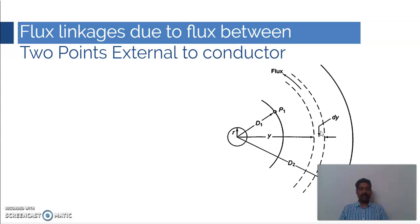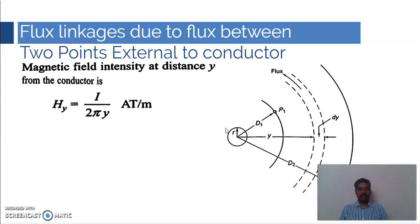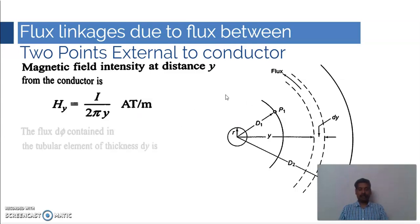Let us see how it is linked with this conductor. The magnetic field intensity at distance y from the conductor is H = I / (2πy). Since the flux is outside the conductor, the total current is I, so the magnetic field intensity is I / (2πy) ampere-turns per meter. This is the magnetic field intensity at distance y from the conductor within this tubular column.